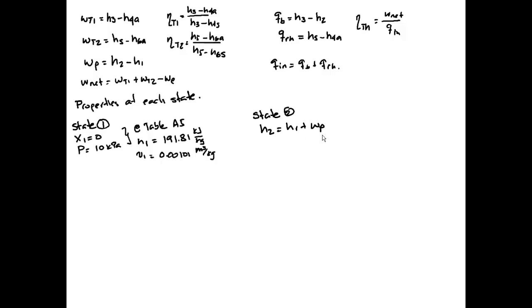Volume 1 will be 0.001 cubic meters per kilogram. For state 2, h2 equals h1 plus the work of the pump. We know that we can approximate the work of the pump as volume 1 times (P2 minus P1), since the liquid is incompressible. Substituting, we get h2 equals 201.90 kilojoules per kilogram.